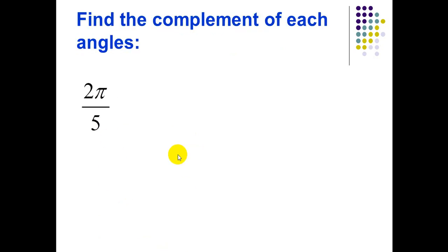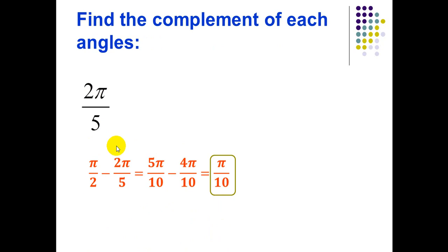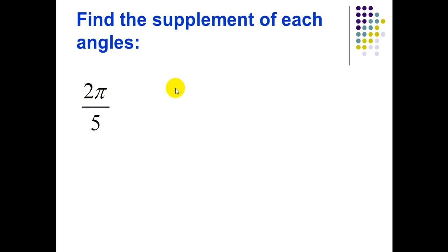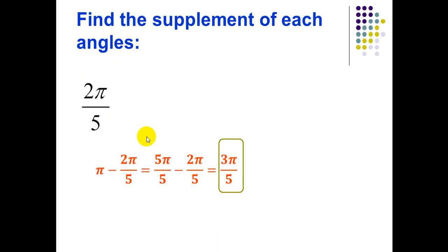Find the complement of each angle in radians. For 2π/5: complement means the sum of the two angles equals π/2. π/2 is equivalent to 90°. So π/2 minus 2π/5 equals π/10. For the supplement of 2π/5: supplementary means sum equals π (equivalent to 180°). So π minus 2π/5 equals 3π/5.